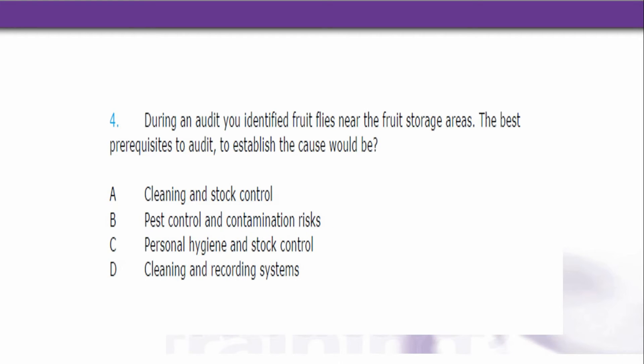Number 4. During an audit you identified fruit flies near the fruit storage areas. The best prerequisites to audit to establish the cause would be what? Is it: A. Cleaning and stock control? B. Pest control and contamination risks? C. Personal hygiene and stock control? D. Cleaning and recording systems?